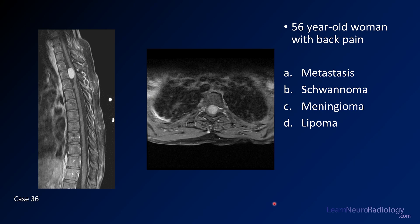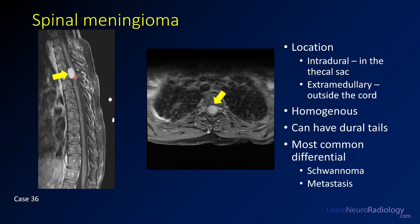Case 36 is a 56-year-old woman with back pain. We have two post-contrast fat-saturated images: a sagittal and an axial of the thoracic spine. This is a case of a meningioma. There's a well-defined mass in the ventral aspect of the thecal sac with a broad dural attachment — rounded and extra-medullary, displacing the spinal cord posteriorly and taking up most of the spinal canal. The differential is schwannoma, met, or meningioma, but this seems well-behaved with no destruction of adjacent structures and no neural foraminal involvement, making meningioma most likely.